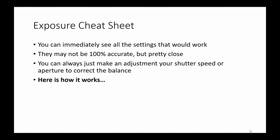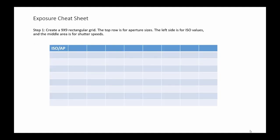Here's how it works. First, you create a 9x9 rectangular grid. The top row is for aperture sizes, the left side is for ISO values, and the middle area is for shutter speeds. Then you write the apertures across the top and the ISO values down the left side.